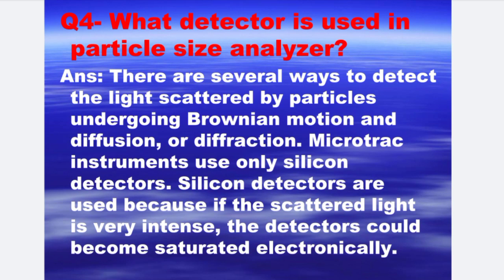Next is: what detector is used in particle size analyzer? The answer is, there are several ways to detect the light scattered by particles undergoing Brownian motion and diffusion or diffraction. Microtrack instruments use only silicon detectors. Silicon detectors are used because if the scattered light is very intense, the detector would become saturated electronically.